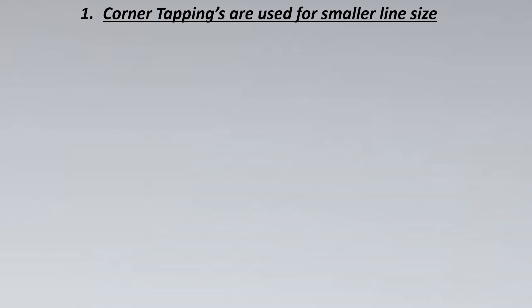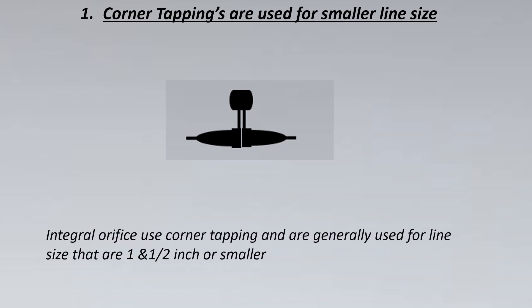Corner tappings are usually used for smaller sizes because the vena contracta would come at a smaller distance from the DP created. Hence we can measure it very close to the orifice or the DP meter. So in corner tappings, especially a meter called an integral orifice meter is used. As a thumb rule, for line sizes that are one and a half inch or smaller, we usually go for such integral orifice assemblies.